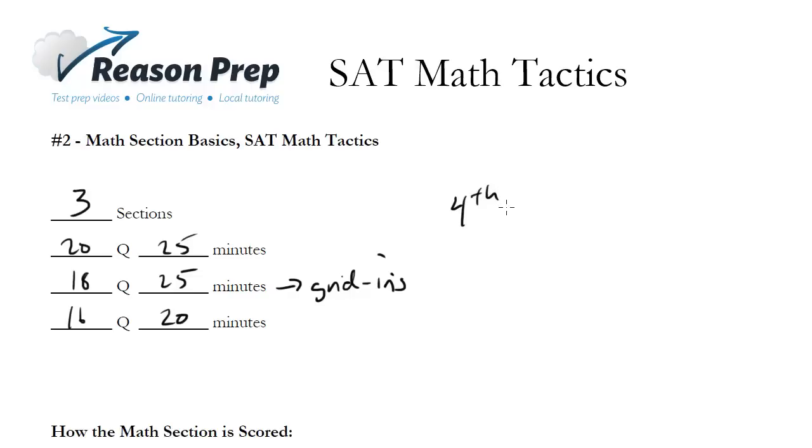Now occasionally you might have a fourth math section. If you do, that section would be an experimental section. It doesn't count towards your score; they just use it to test for future questions. But you really can't tell which one is the experimental. Maybe you can narrow it down to two if you have two grid-in sections, but don't try to guess - just treat them as if they all count.